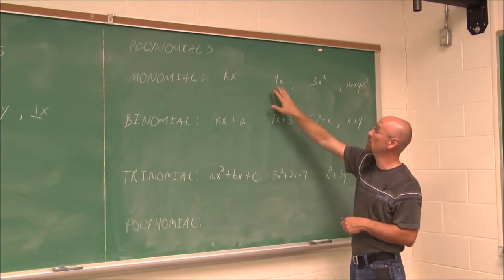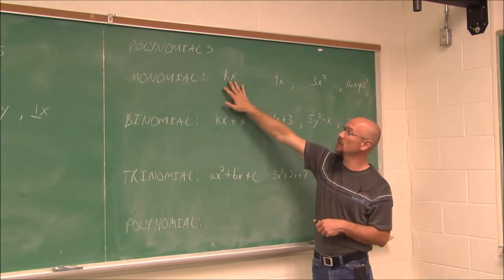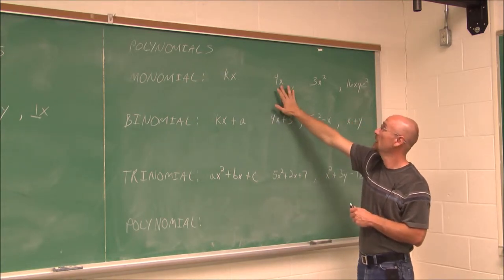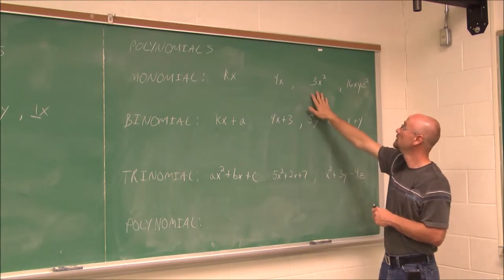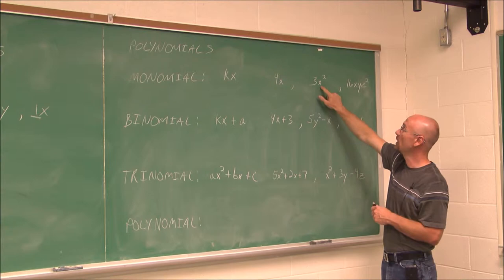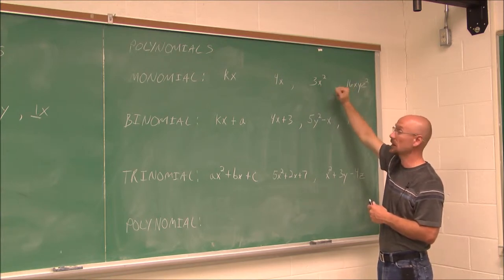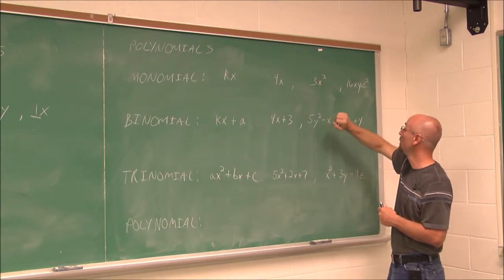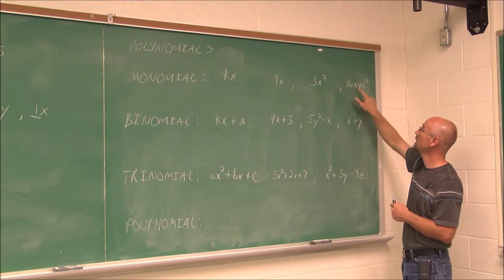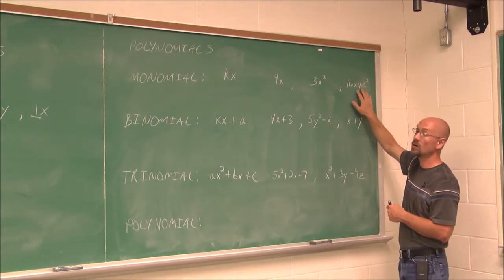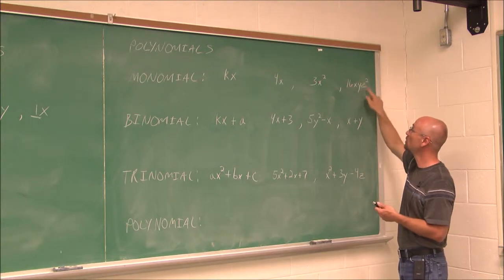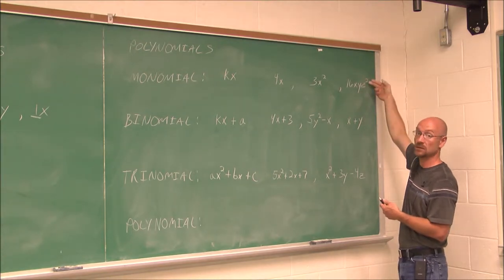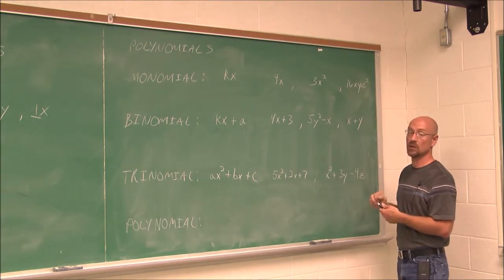For monomials: one example is 4x — a numerical coefficient of 4 and variable x. We also have 3x squared — coefficient 3, variable x squared, still just one term. And 16xyz squared — even though it has more than one variable, it's all multiplication making it a single product, a single term, a monomial.